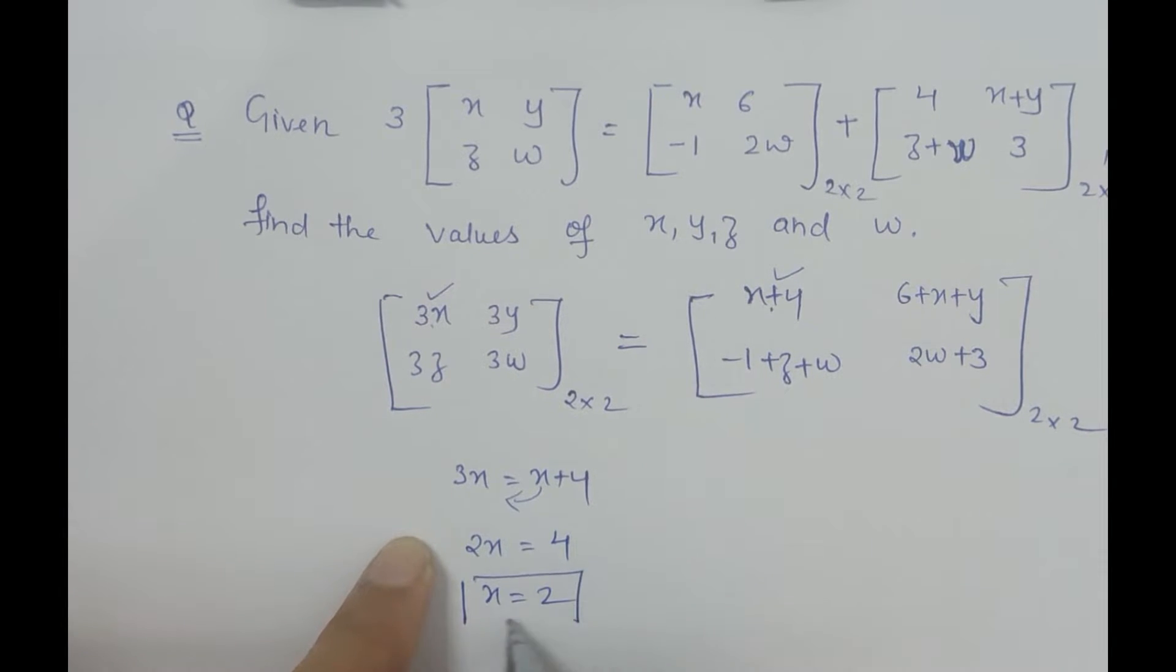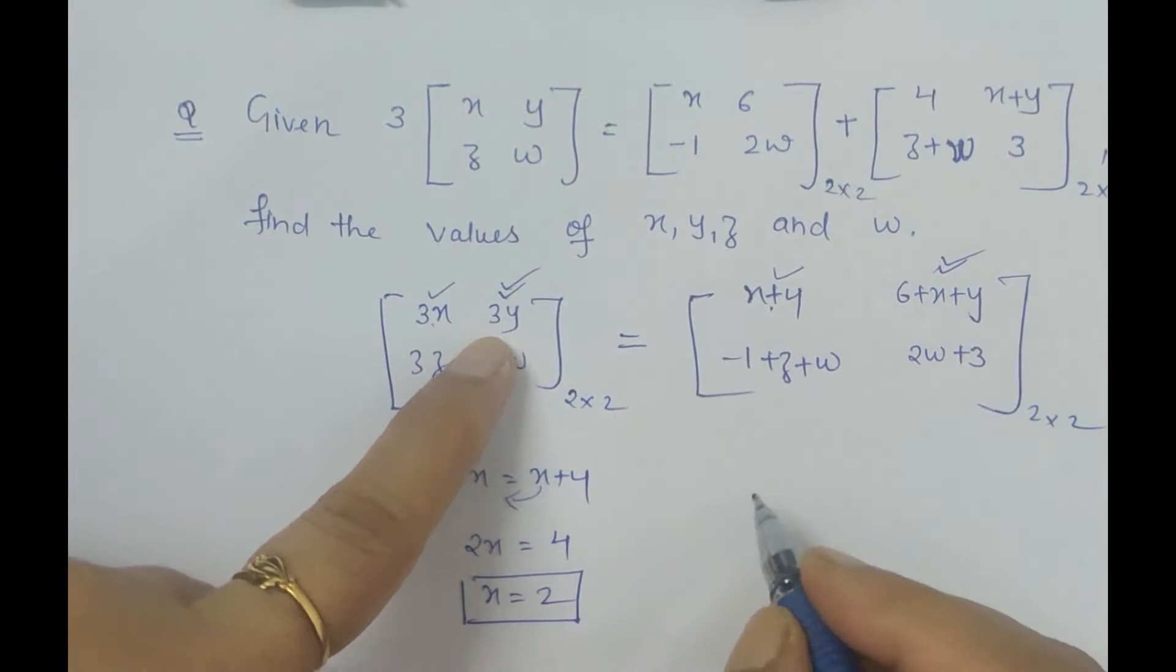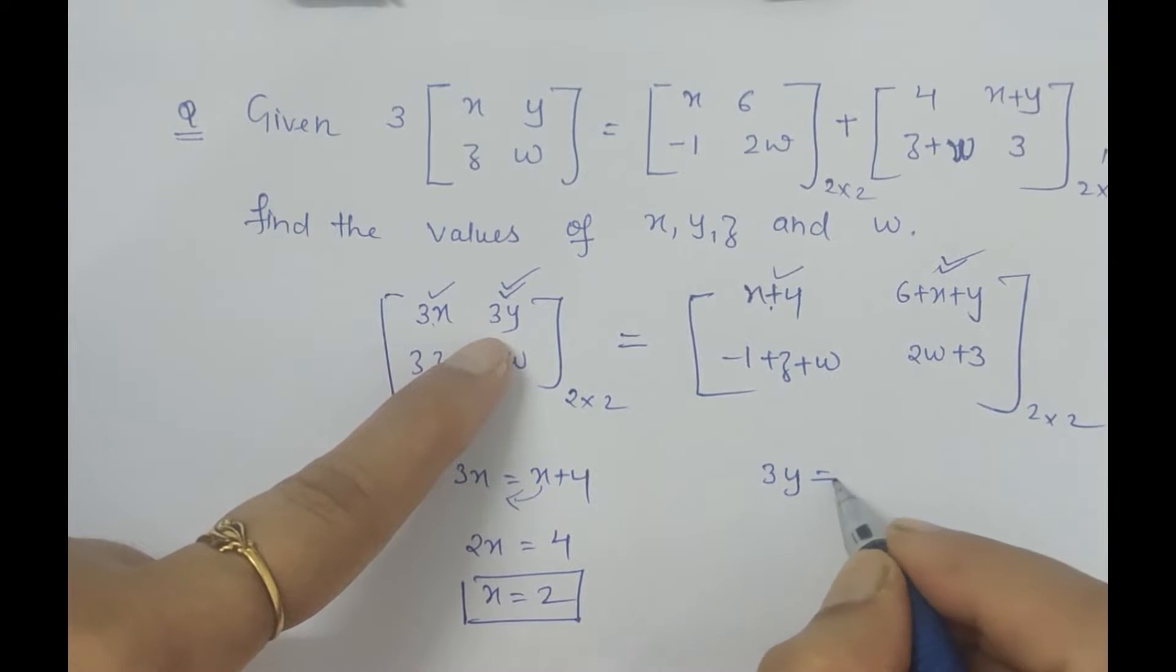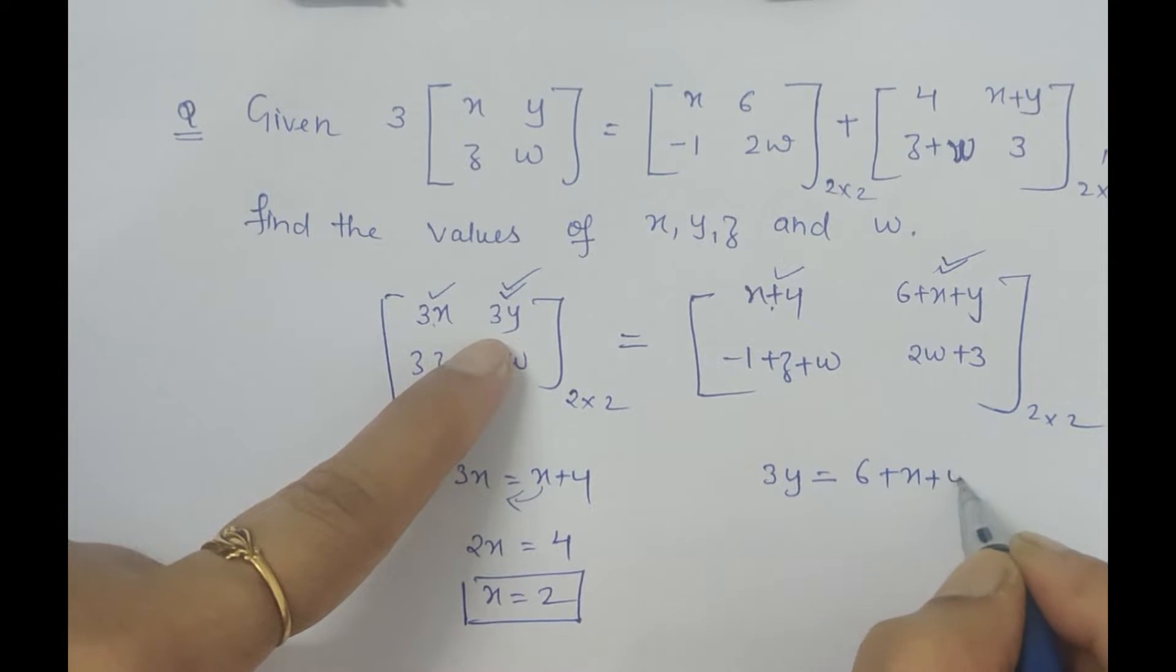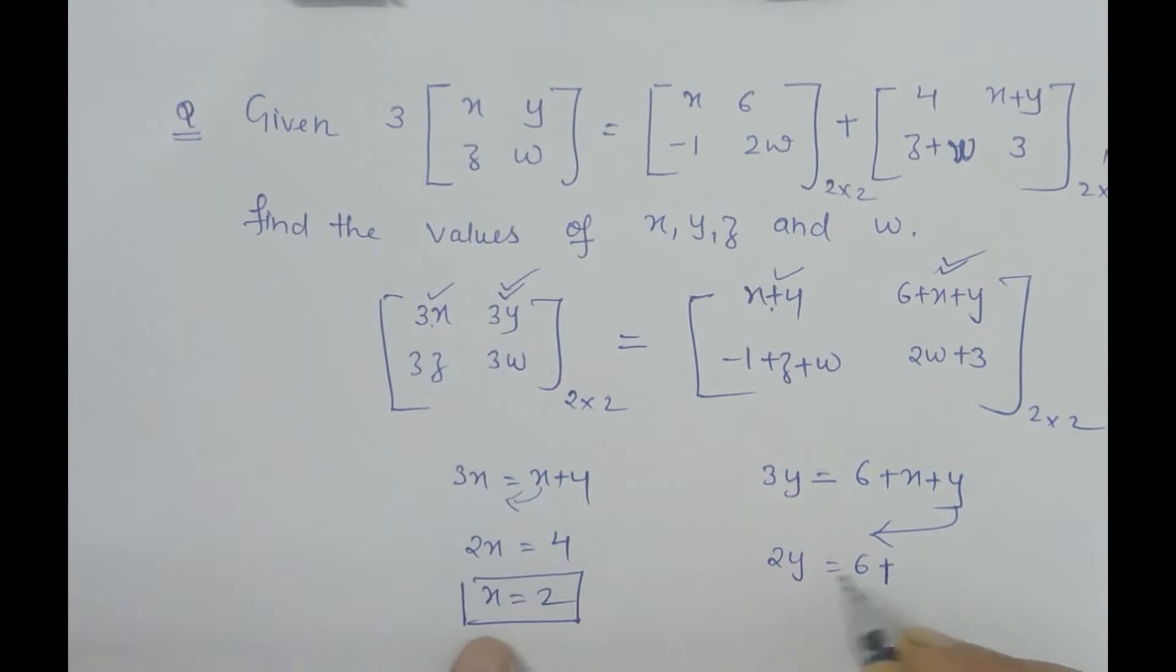Now let's substitute: 3y equals 6 plus x. x is already obtained, which is 2, so 3y equals 8, giving 2y equals 8 and y is 4. So the value of y is 4.